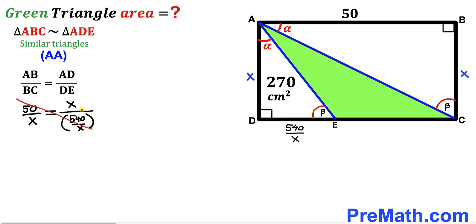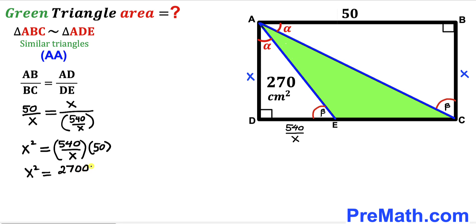Cross multiplying gives X × X = (540 / X) × 50, which simplifies to X² = 27,000 / X. Multiplying both sides by X eliminates the fraction, giving X³ = 27,000.